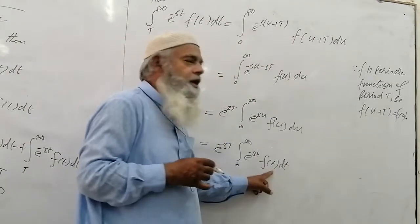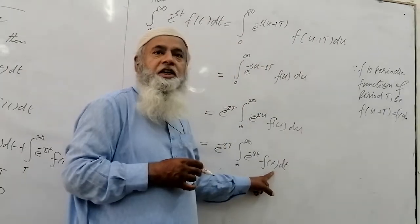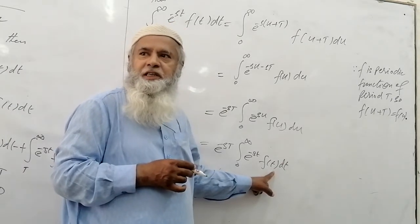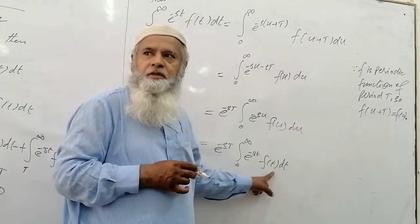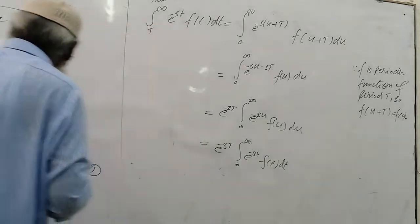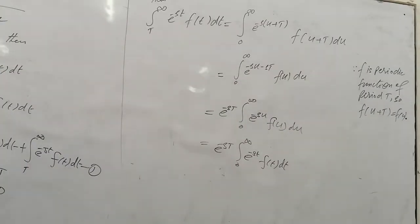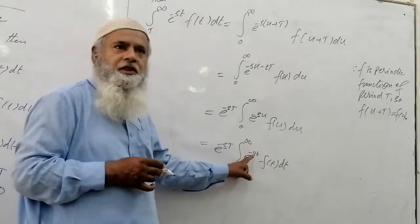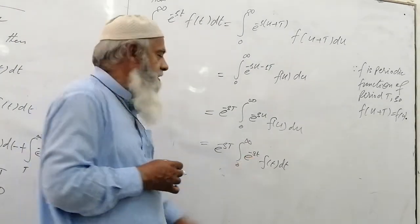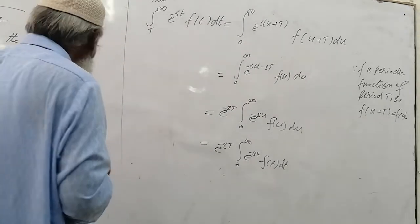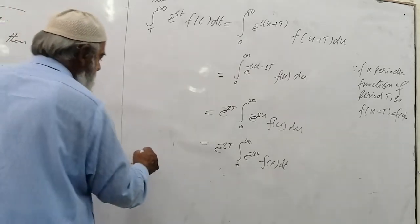Now we replace u by t, since it is a variable of integration in a definite integral and we can change the variable. This substitution is valid because we can change the variable of integration. If we do this, we can also change the limits accordingly, and we put this value back into equation 1.